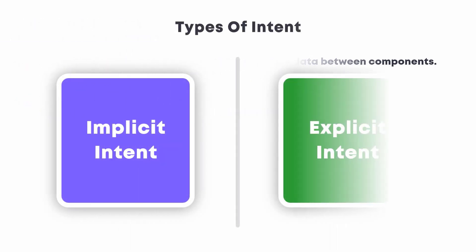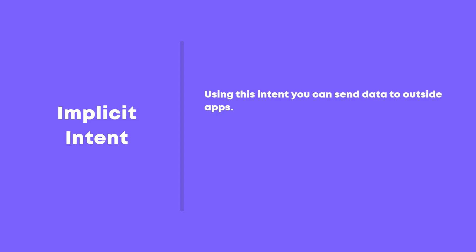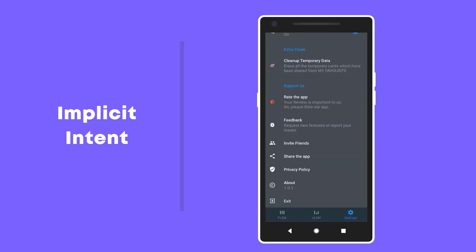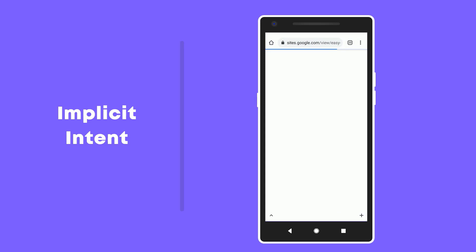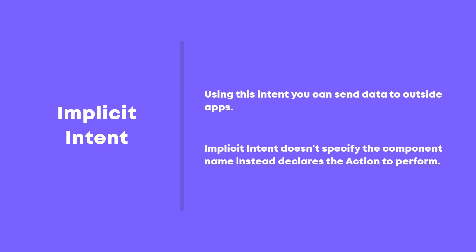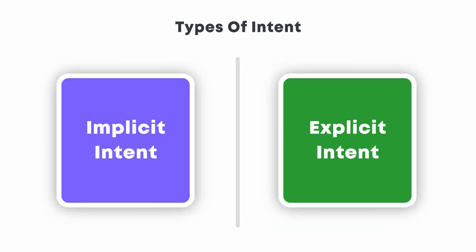The two types are implicit intent and explicit intent. Whenever you need to pass data from your app to other apps — for instance, sharing content with other apps or opening a web page from your app — you should use implicit intent. Implicit intents do not declare the class name of the component to start, but instead declare an action to perform. On the other hand, explicit intents work within the application, for instance launching an activity or starting a service, but you need to specify the component name or the class name.